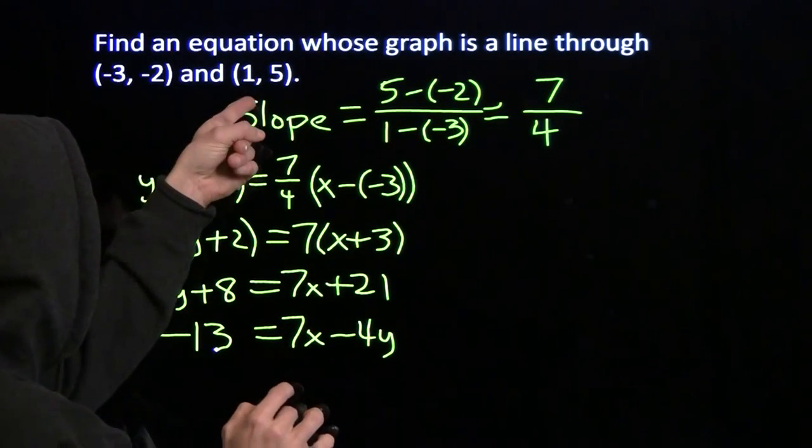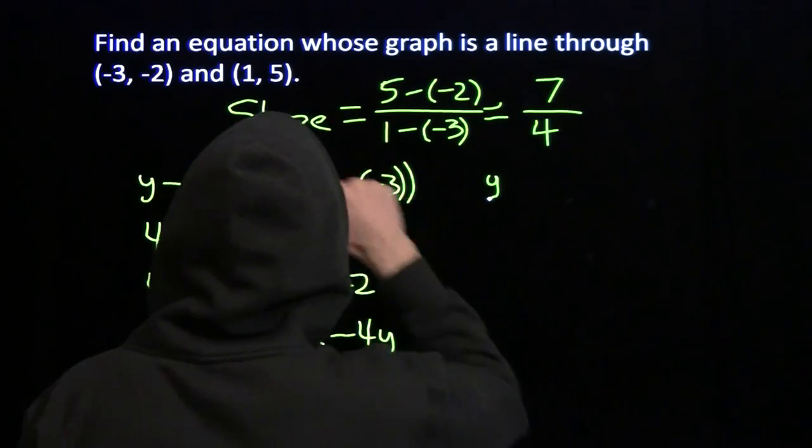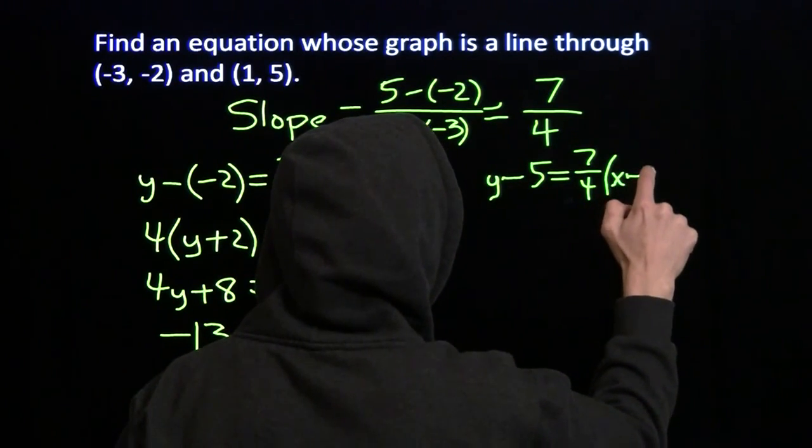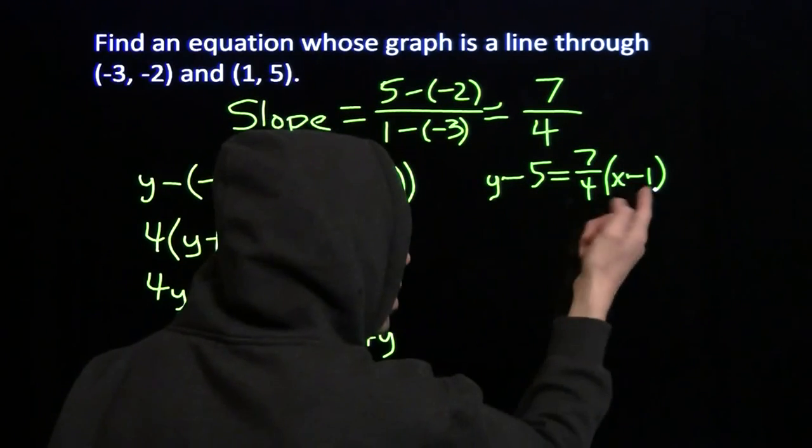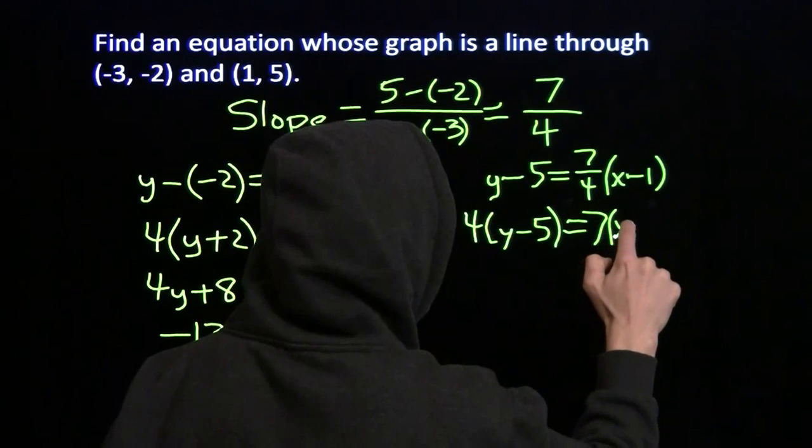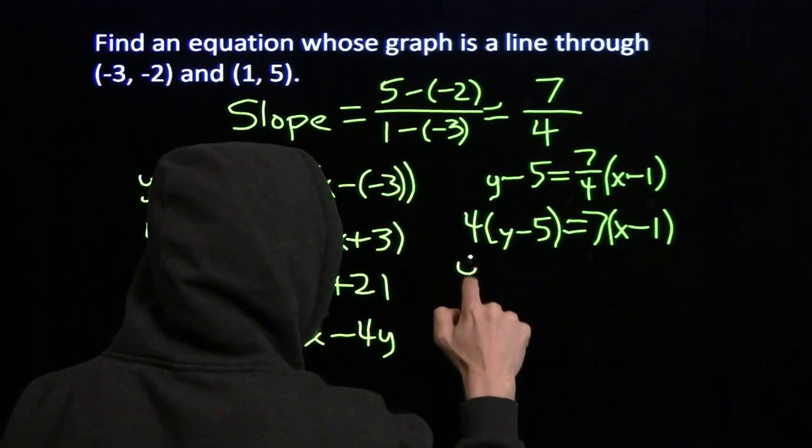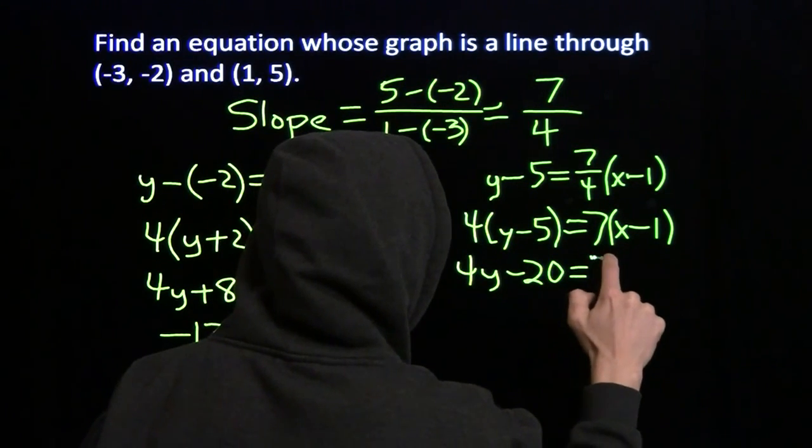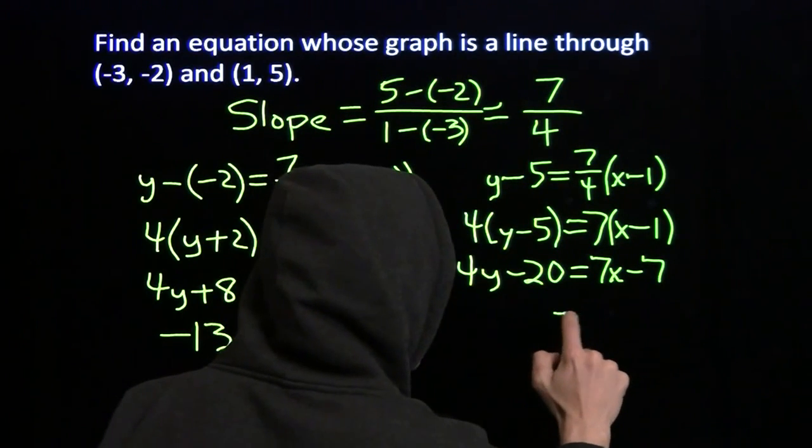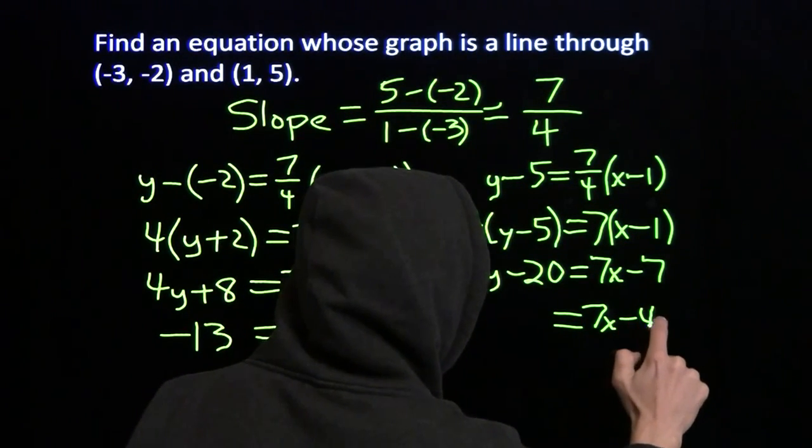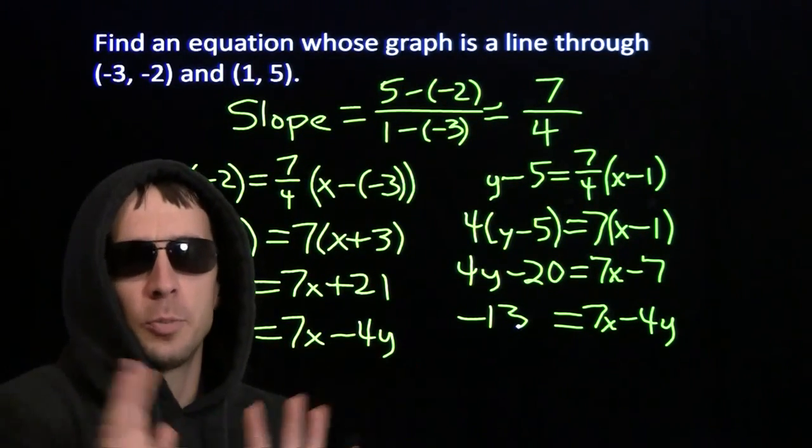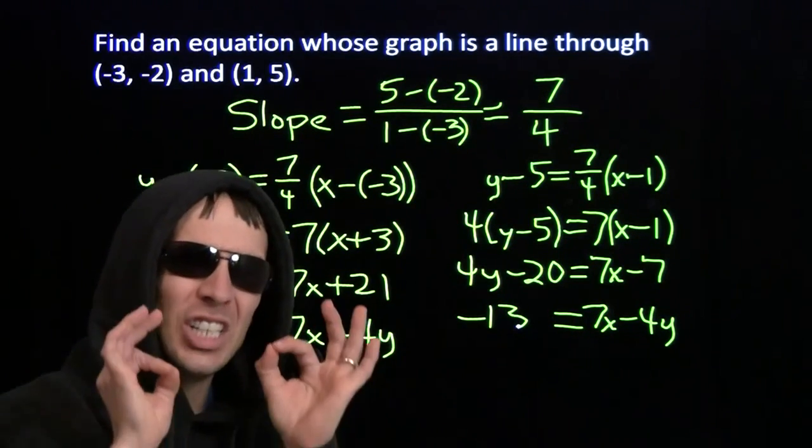Now let's check out what happens if I do the same thing, but with the other point. We start off with the difference in the y-coordinates is the slope times the difference in the x-coordinates. x-1, y-5, there's our slope. Multiply both sides by 4 again. And then we're going to expand these two products. And then once again, we're going to clean up, get all my variables together, subtract 4y from both sides, and add 7 to both sides. Check it out. It doesn't matter which point we use. We get the same equation either way.